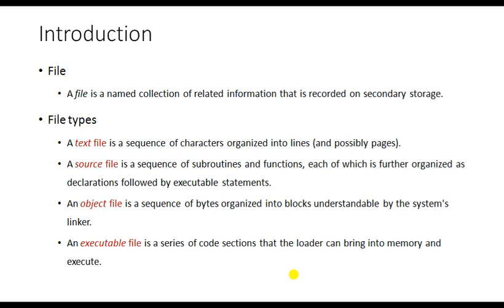Source files can be understood by humans but cannot execute directly. An object file cannot be understood by humans — it consists of a series of bytes or blocks of bytes and can only be understood by the system's linker. The final type is an executable file. In Windows, if you double-click on certain files and they run automatically, those are called executable files.